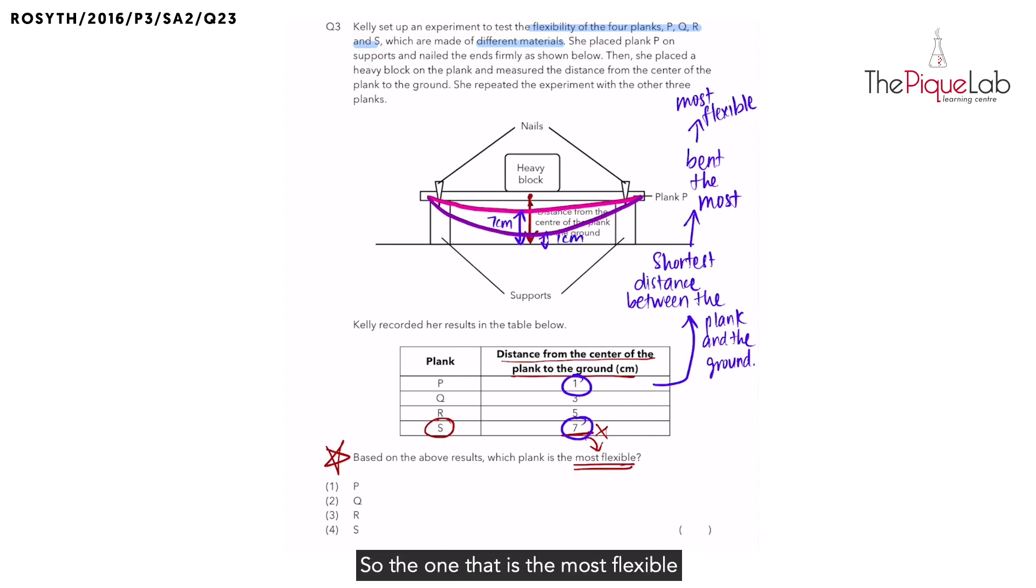So the one that is the most flexible is actually plank P, not plank S. Therefore, the answer is number 1.